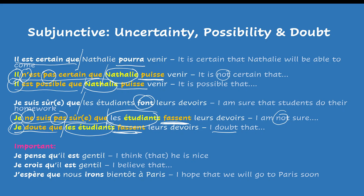To summarize: to be able to use the subjunctive with those expressions, you will need a sentence with two clauses. In the first clause, you need an expression that expresses uncertainty, possibility, or doubt. And you also need two different subjects — the subject of the first clause must be different than the subject of the second clause.